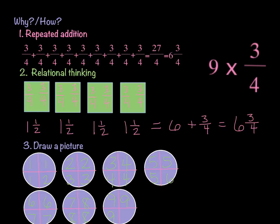Our third option is to draw a picture, as you can see down here at the bottom. What I did was I divided each of these circles into 4 parts, because my denominator up here in my original problem was 4.